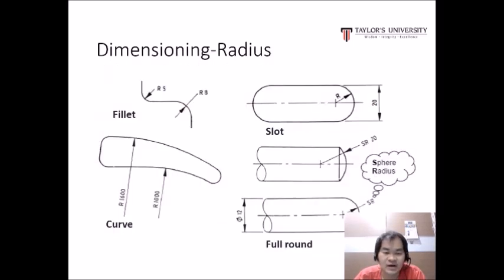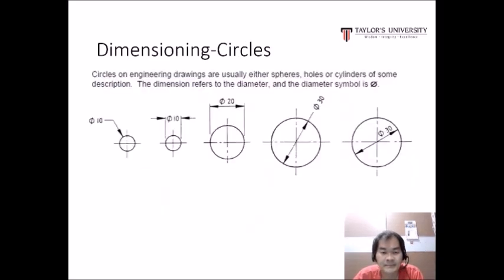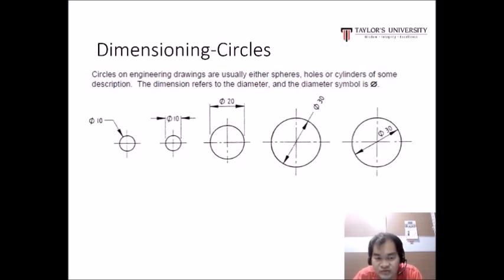This is how we dimension a radius, fillet, curve, slope, and sphere radius. Circles on engineering drawings are usually either spheres, holes, or cylinders. The dimensions refer to the diameter, and the diameter symbol is Ø. There are five ways to dimension a circle.